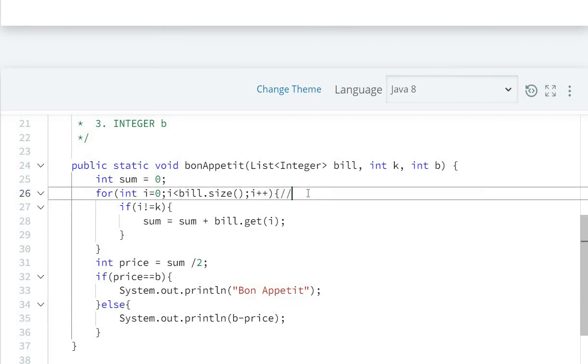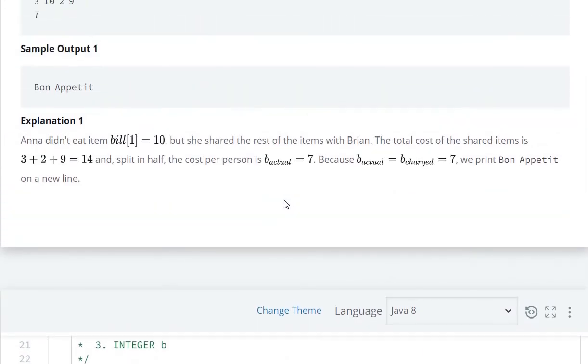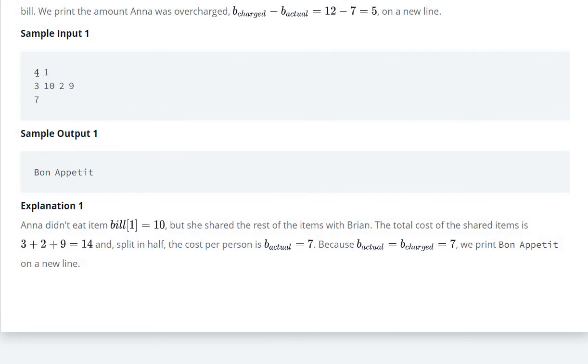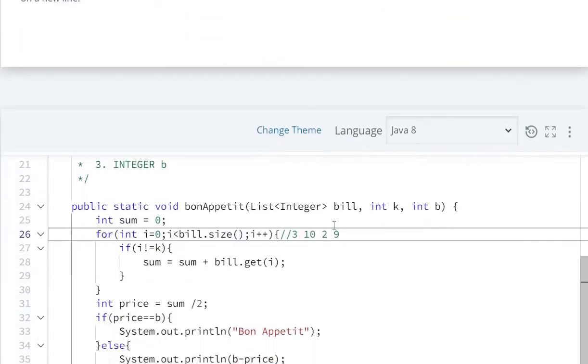We have n and k values. Let me see. K value is 1, so the k value is 1, and the bill value is 7.